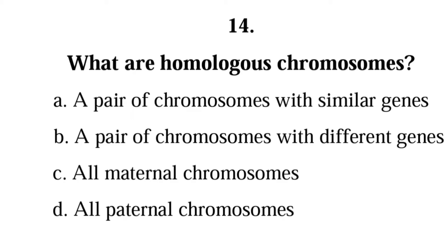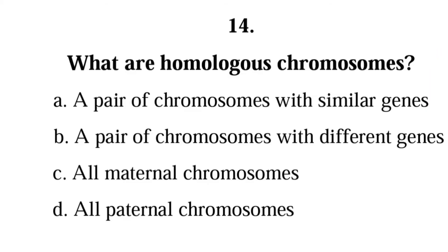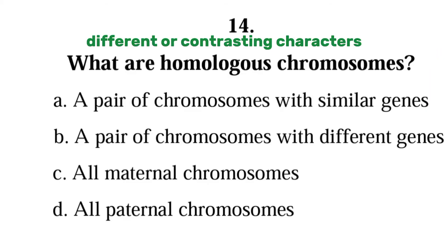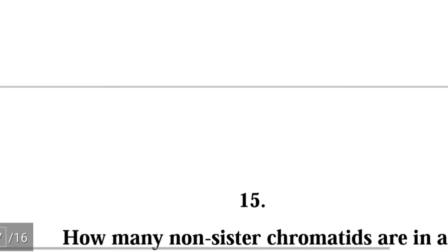Question 14: What are homologous chromosomes? A. a pair of chromosomes with similar genes, B. a pair of chromosomes with different chromosomes, C. all maternal chromosomes, D. all paternal chromosomes. The correct answer is A; homologous chromosomes are a pair of chromosomes with similar genes but different characters.